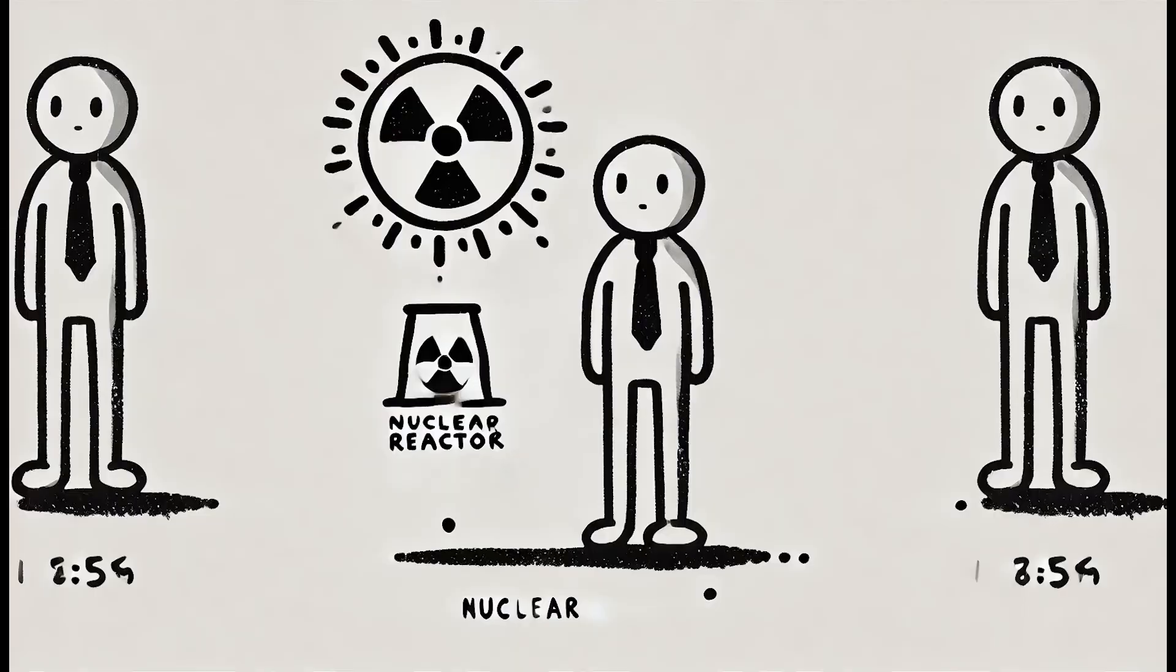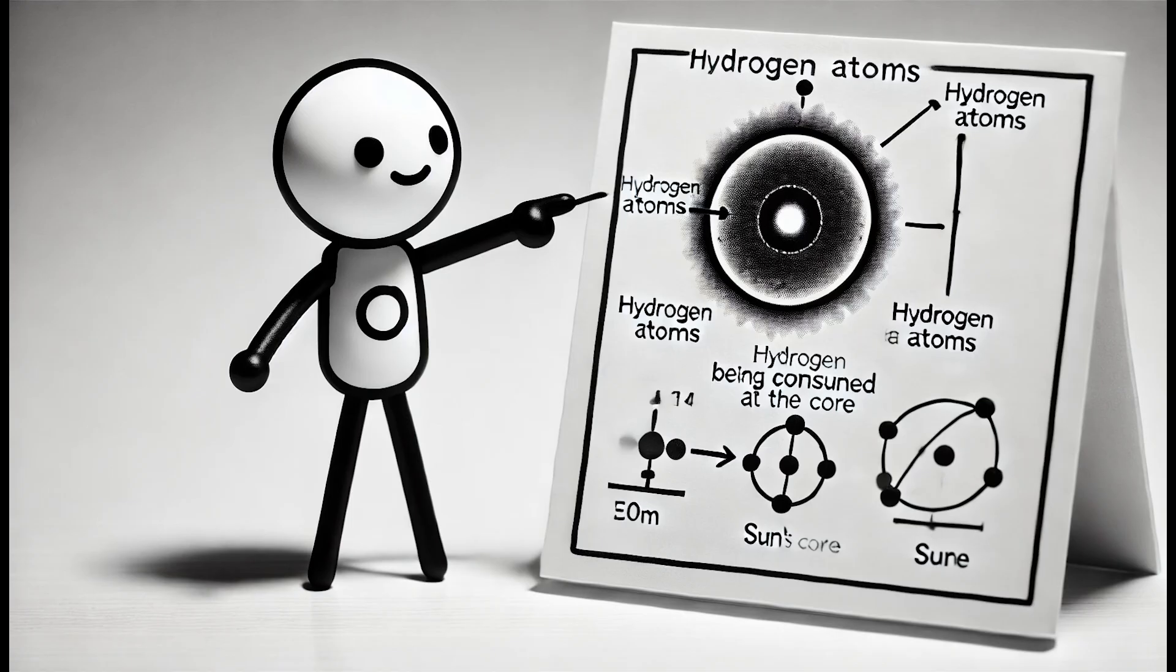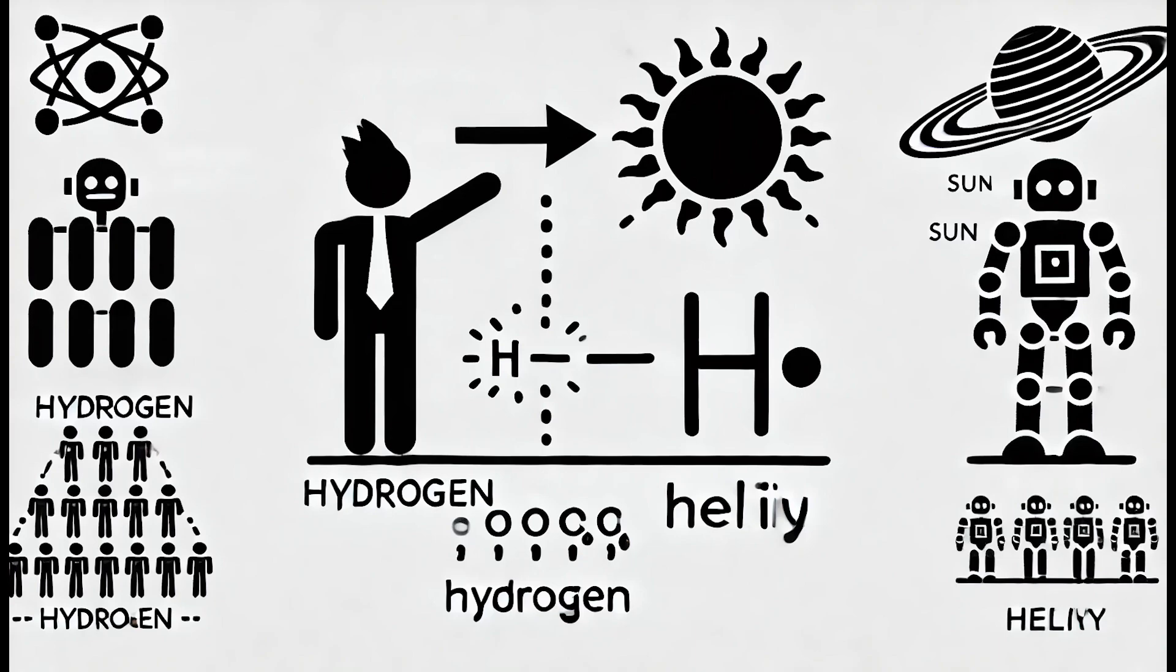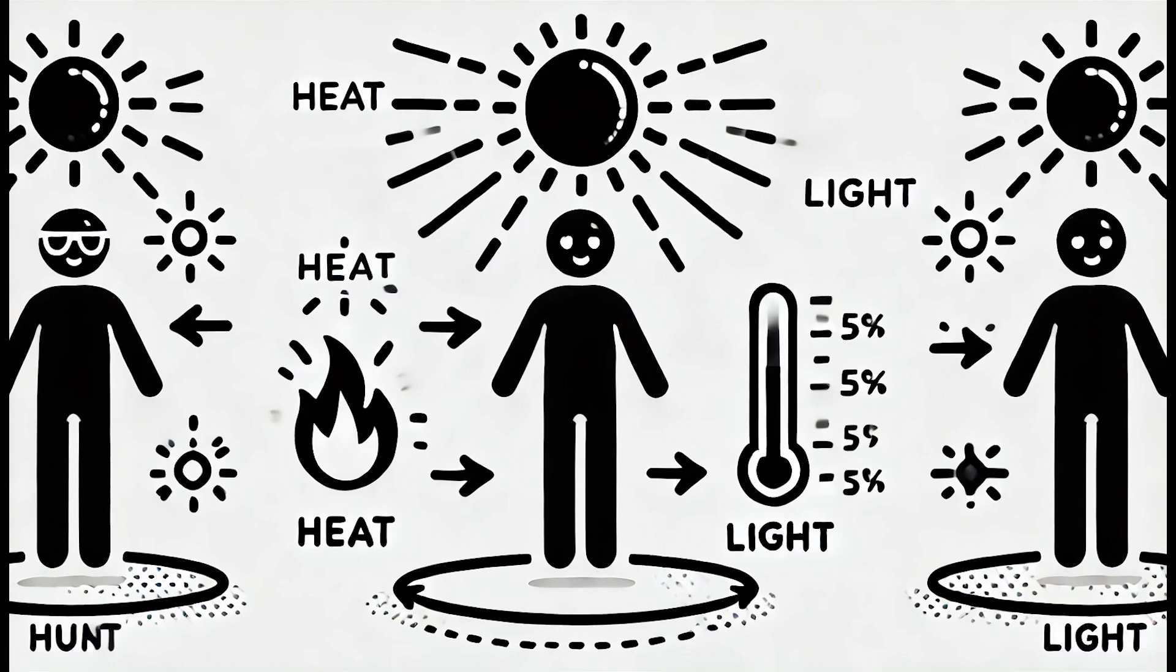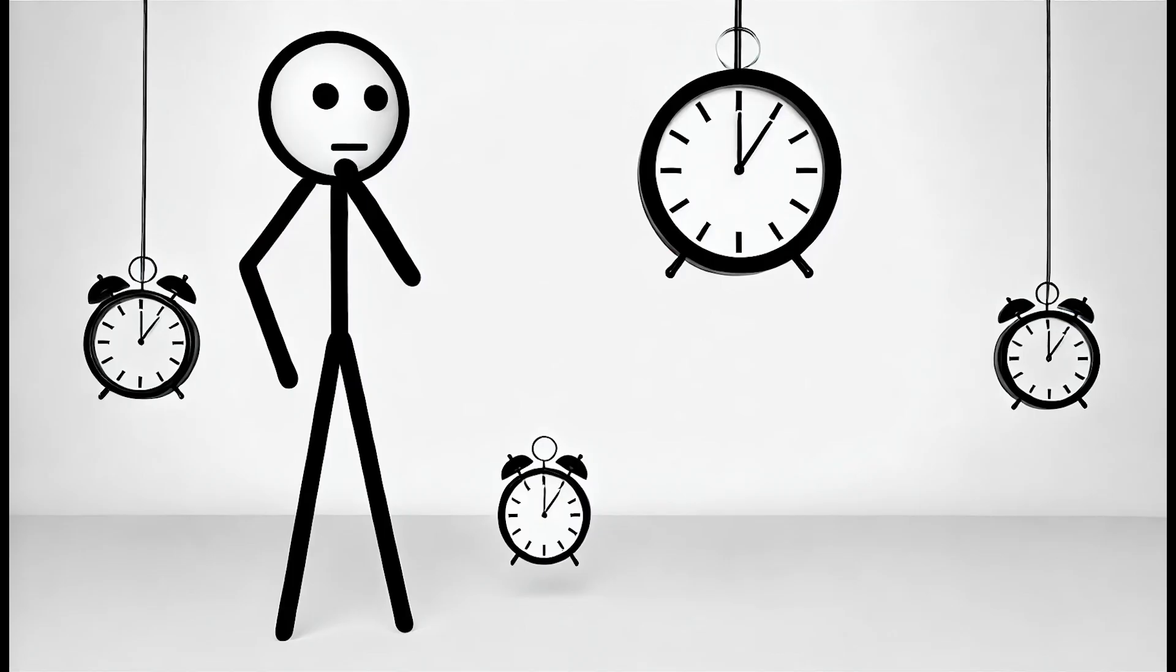The sun is like this gigantic nuclear reactor, burning up hydrogen at its core and turning it into helium. This process, called nuclear fusion, is what gives us all that amazing heat and light. Without it, we wouldn't be here at all.